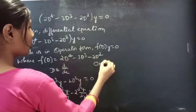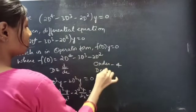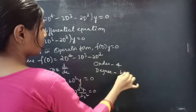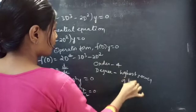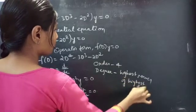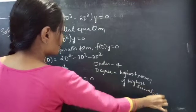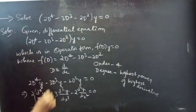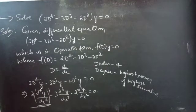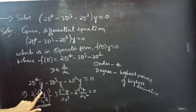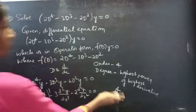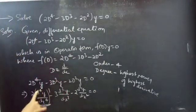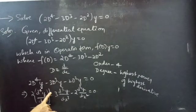So our order will be 4. We know that the highest power of the highest derivative is our degree. We have only one such term, so the power of the highest derivative is 1. Therefore, the degree is 1, not 4.